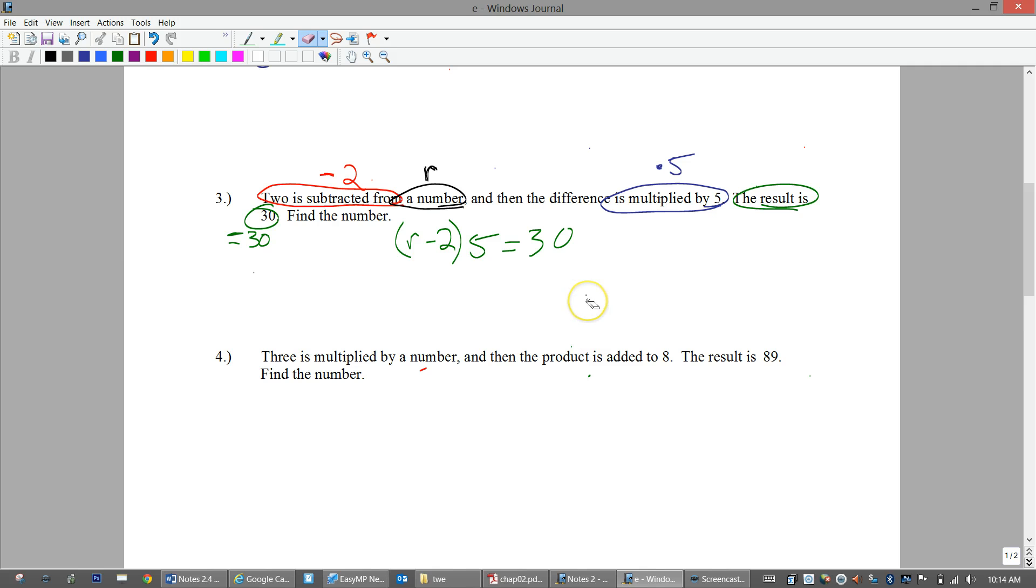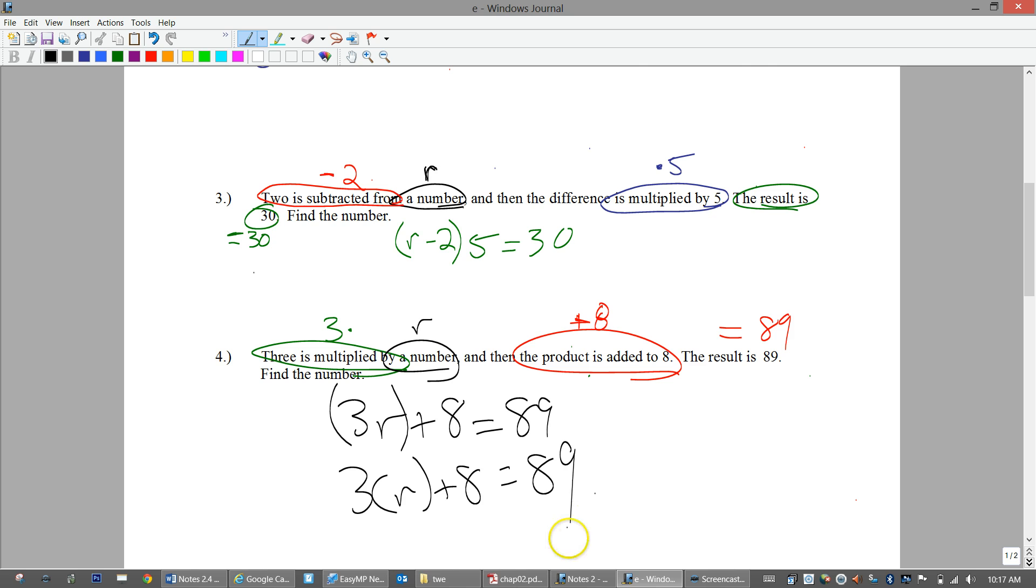Let's do it again. Three is multiplied by a number. Let's use R. And that whole thing is added to eight. The result is 89. So three R, three is multiplied by a number, and the result is added to eight equals 89. You could have done this without parentheses. That's OK. If you didn't do that, it's also OK because you have to multiply first before you add anyway. Does that make sense?